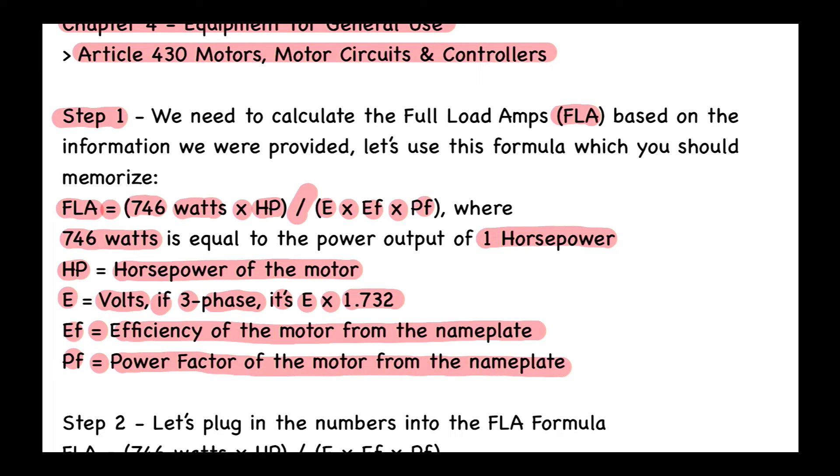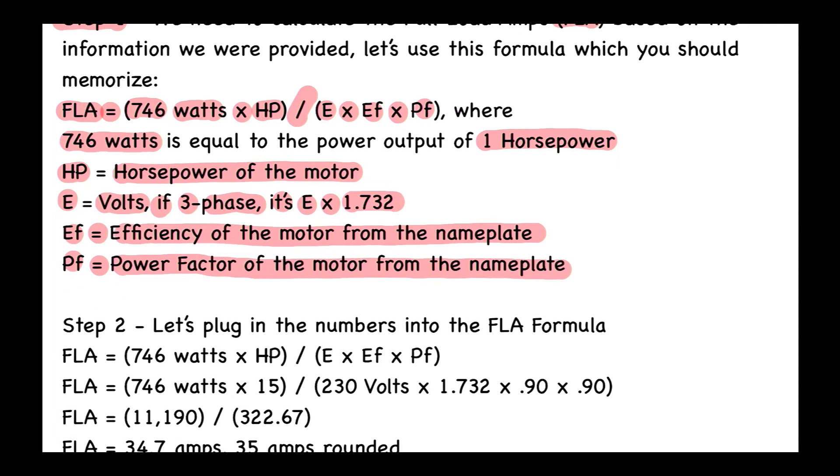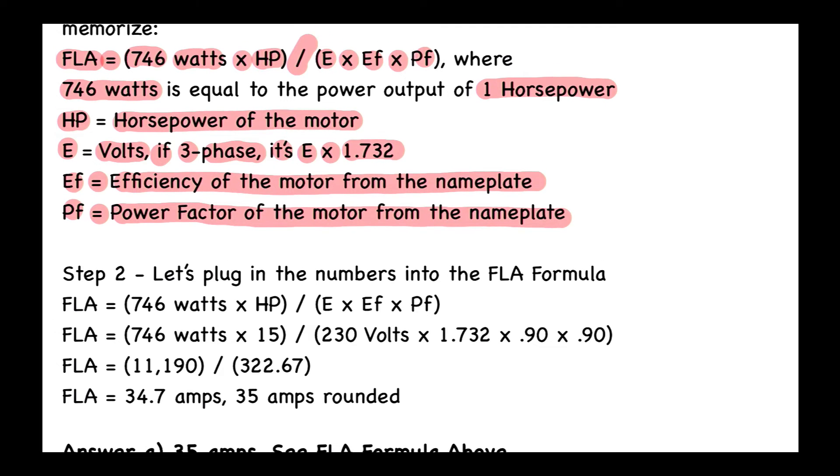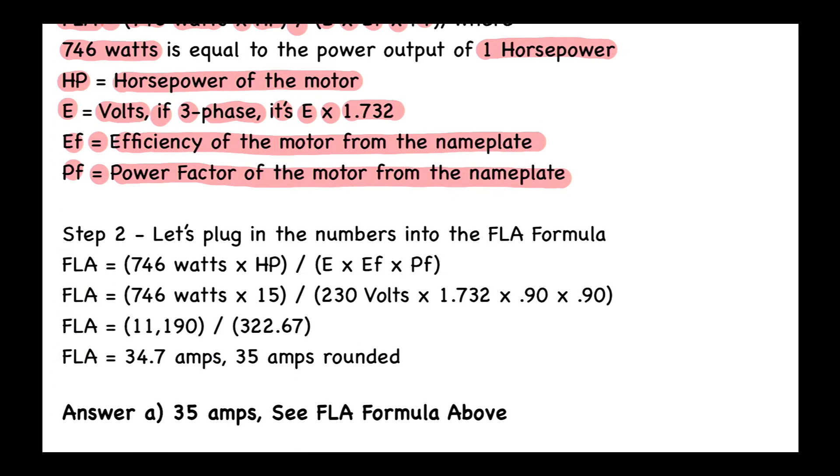Step number two: let's plug in the numbers into the FLA formula. We have FLA equals 746 watts times the horsepower divided by E times EF times PF. So now we get to the next line: FLA equals 746 watts times 15, that's for the 15 horsepower, divided by 230 volts times 1.732.